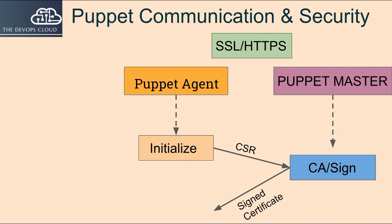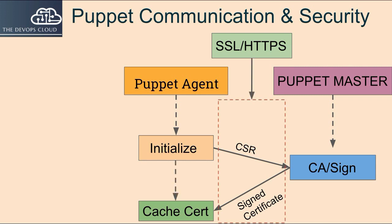You can use the Puppet server CA command to inspect requests and sign new certificates. Agents can then download the signed certificates.